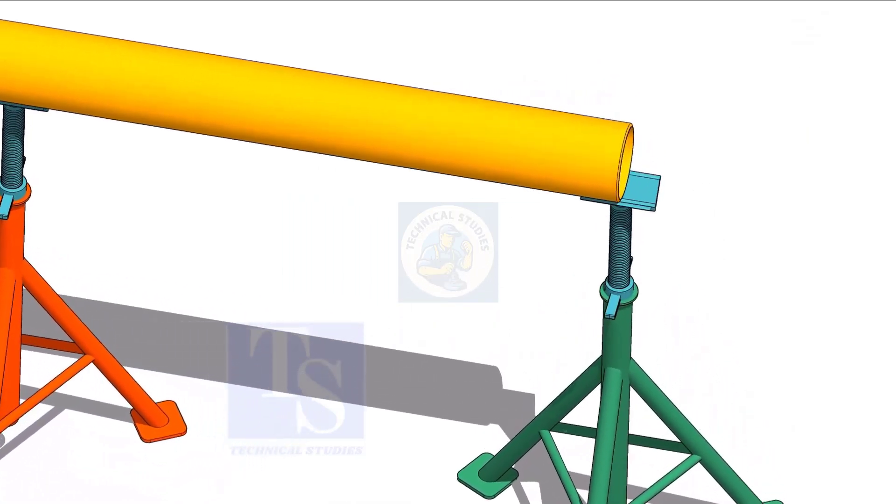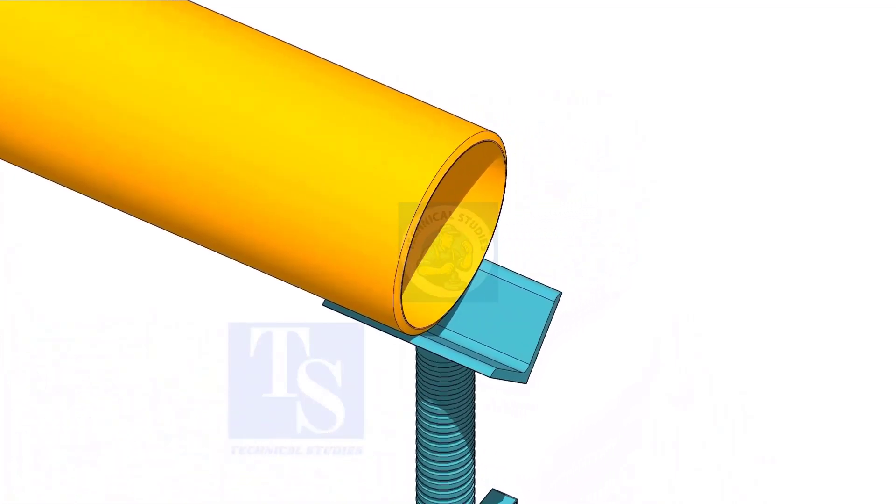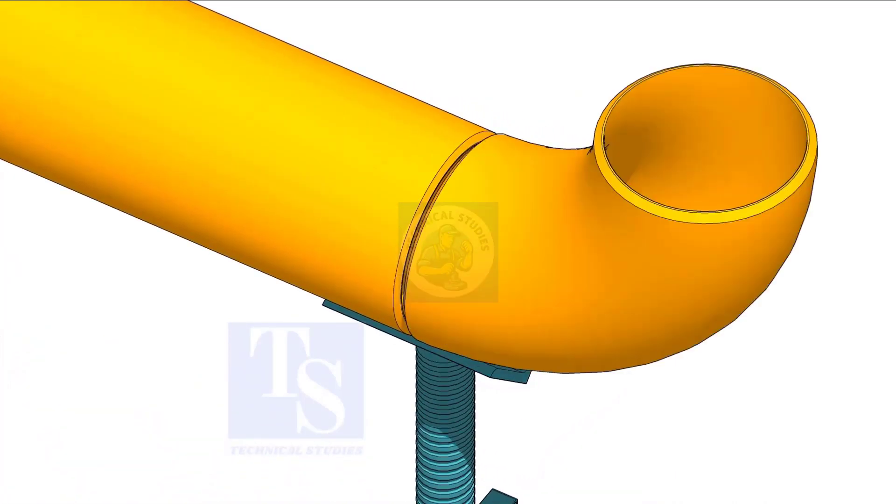Put the pipe on stands and level it. Put the elbow and the gap rod. Correct the overlap and tack weld on both sides.